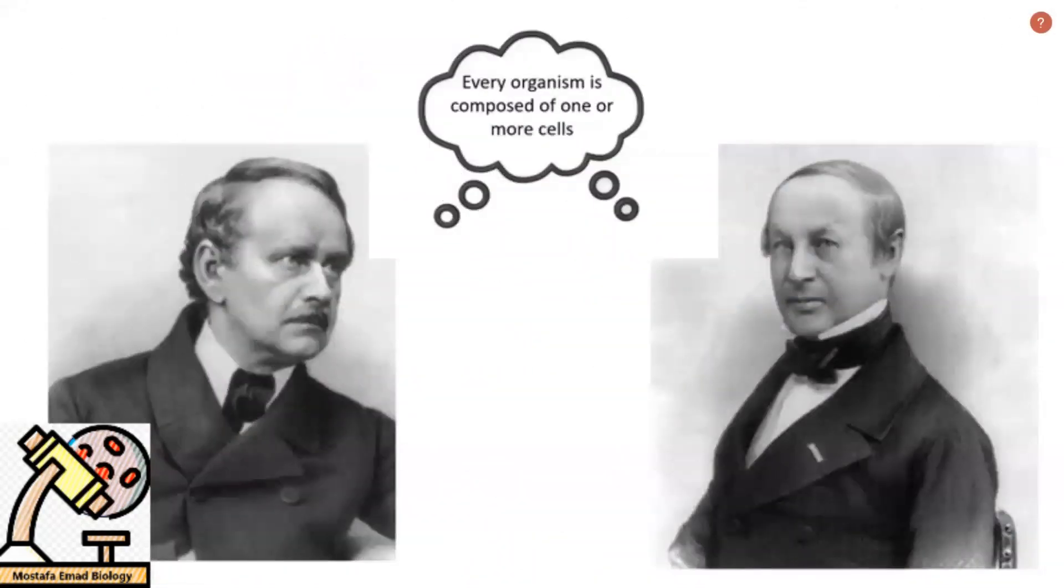By the end of the 1830s, two scientists, botanist Matthias Schleiden and biologist Theodor Schwann, both asserted that every living thing was composed of one or more cells. This was a startling realization.